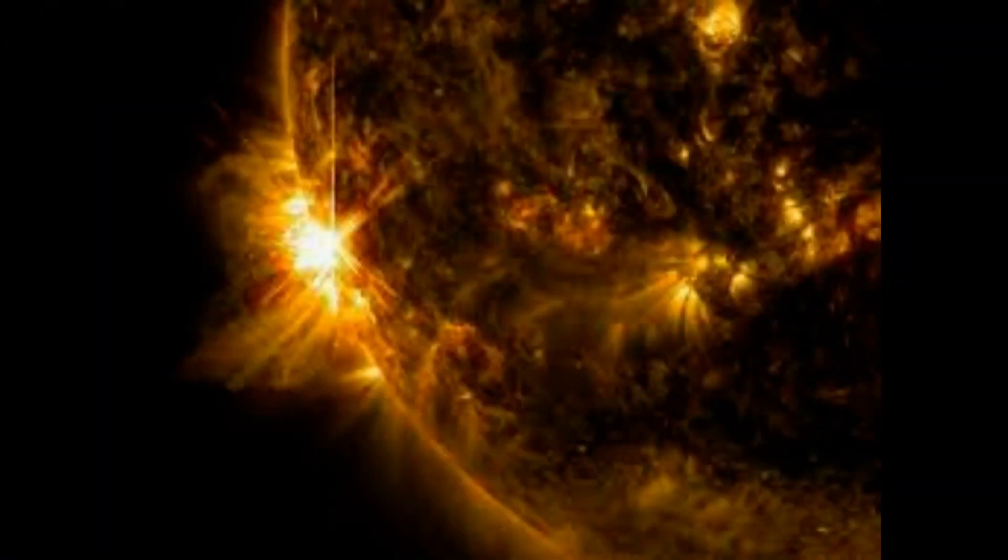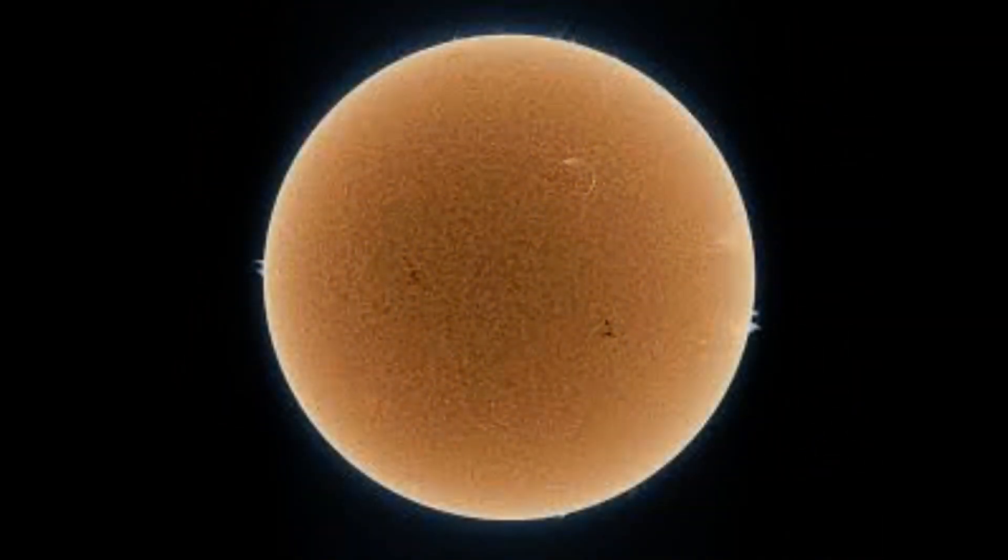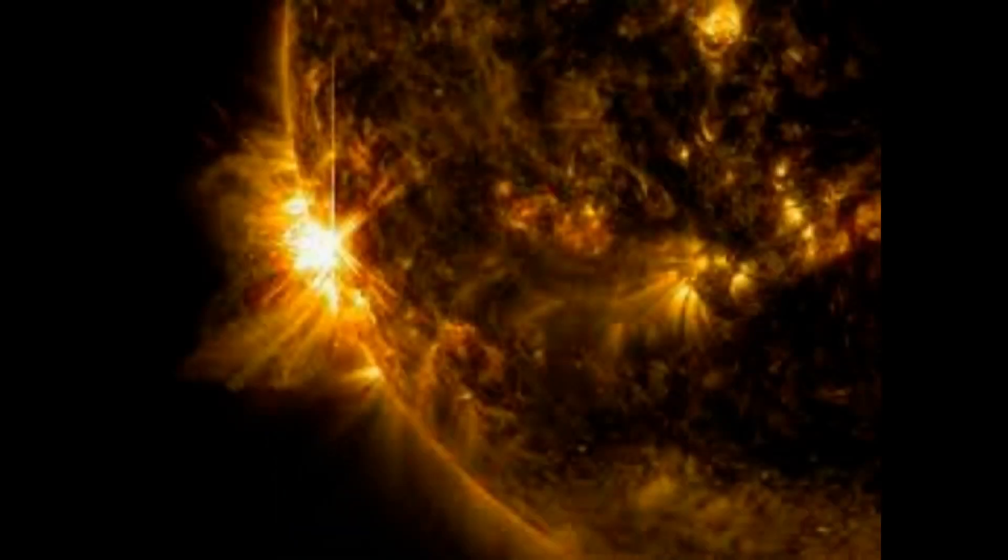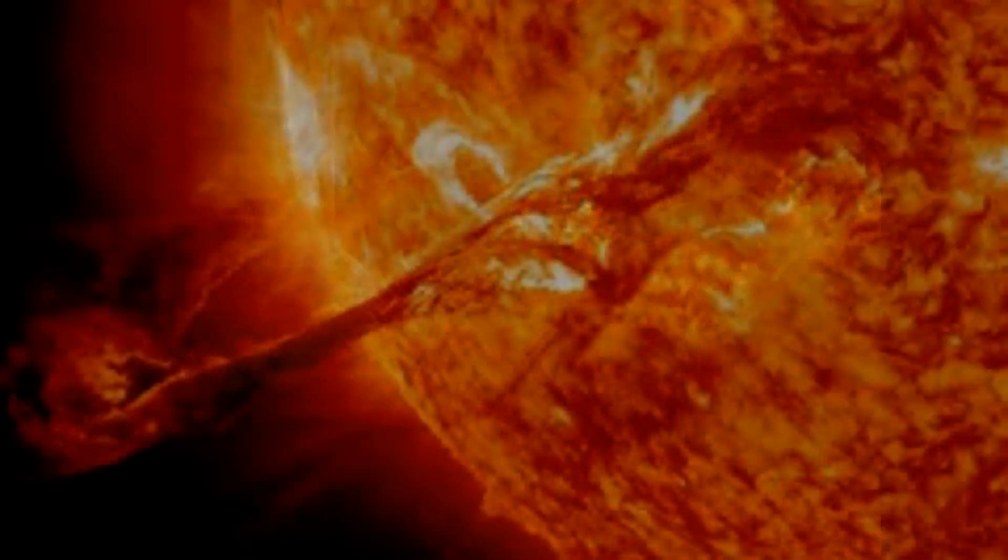Solar flares, bursts of electromagnetic radiation that travel at the speed of light, normally reach our planet within eight minutes of emerging from the sun's atmosphere. The most powerful category are X flares, followed by M-class ones, which is what most of the new ones were.